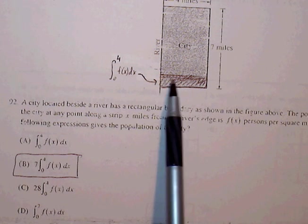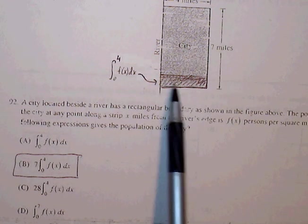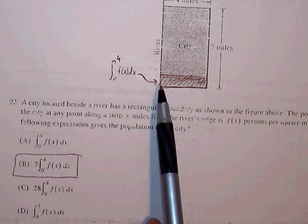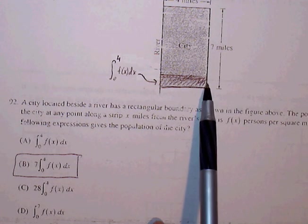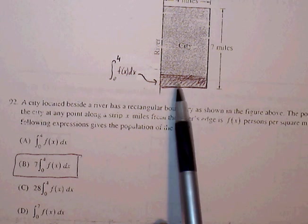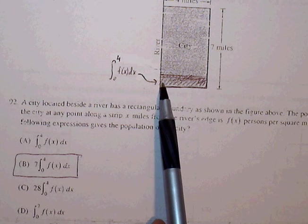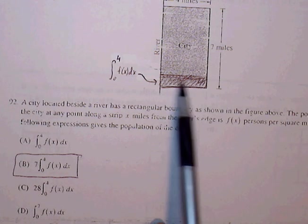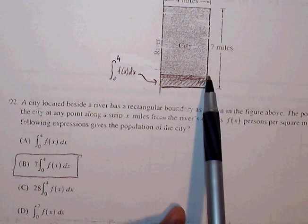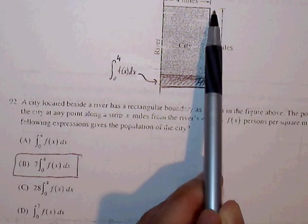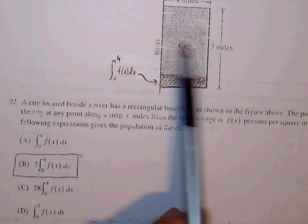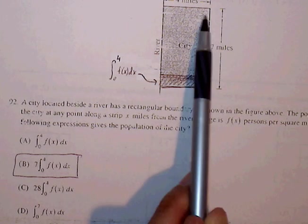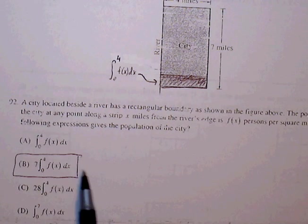However, it's not just the strip that we're worried about. We want to find the population for the entire city, so we need to be able to multiply this strip by 7. So the definite integral of f(x)dx from 0 to 4 will just give us a portion of the population, but we need to be able to multiply this by 7 so that we can take care of all these populations as well. So that's going to bring us to B as our solution.